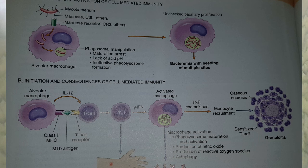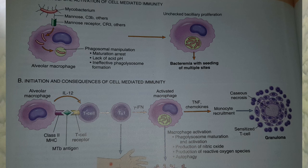There are two responses: the macrophage activating response and the tissue damaging response, occurring due to differentiation of T cells into TH1 and TH2. In the macrophage activating response, interferon gamma causes phagosome-lysosome fusion (phagolysosome formation), bringing the bacilli into contact with destructive enzymes. Then nitric oxide synthase enzyme activation causes nitric oxide production and free radicals. Reactive oxygen species formation and autophagy also occur.